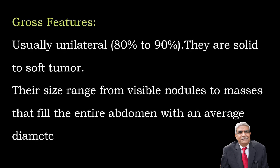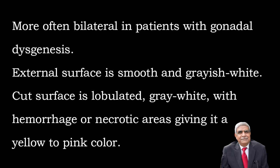Gross features: Dysgerminomas are unilateral in 80-90% of cases. They are solid to soft tumors, ranging in size from a visible nodule to masses that fill the entire abdomen, with an average diameter of 15 cm. They are more often bilateral in patients with gonadal dysgenesis. The external surface is smooth and grayish white. The cut surface is lobulated, grayish white with hemorrhage and necrotic areas giving it a yellow to pink color.